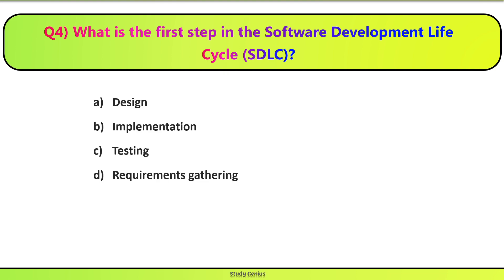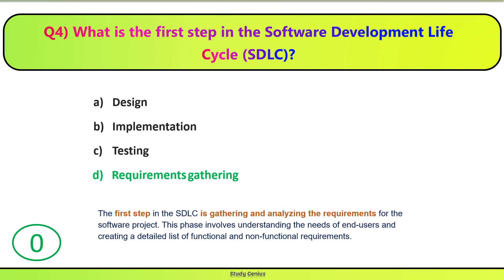Question 4. What is the first step in the software development life cycle? Software development life cycle ka first step kya hota hai — Design, Implementation, Testing, ya Requirements Gathering? Correct answer is D. The first step in the SDLC is gathering and analyzing the requirements for the software project. This phase involves understanding the needs of end users and creating a detailed list of functional and non-functional requirements.